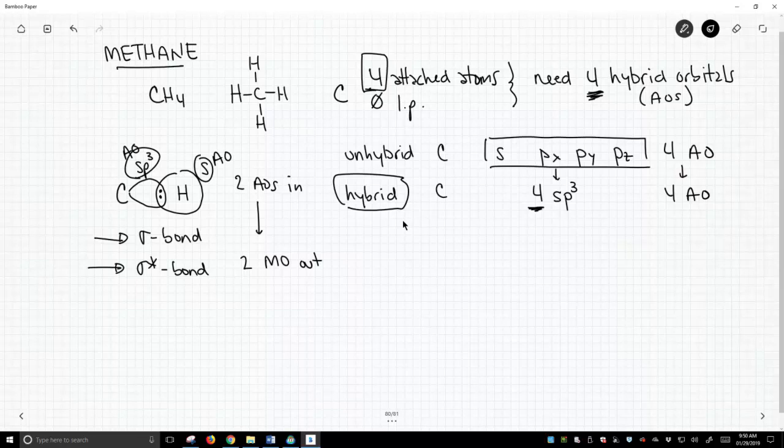This is really no different than what we talked about over on the right. We have four unhybridized atomic orbitals, and we get out four hybridized orbitals. We have to conserve the number of orbitals in the picture.